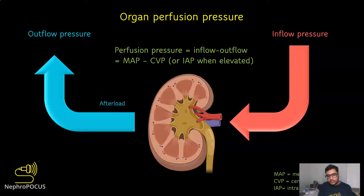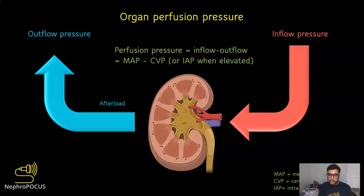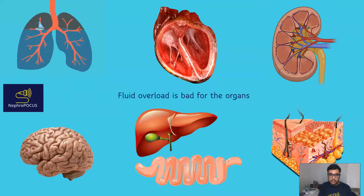Organ perfusion pressure is the difference between inflow pressure and outflow pressure. For example, in the kidney, it's the difference between mean arterial pressure and central venous pressure, or intra-abdominal pressure when it's elevated. You can also view central venous pressure as organ afterload. But in general, when we are assessing hemodynamics at the bedside, we pay more attention to forward flow — making sure stroke volume is adequate and the patient is volume responsive — and we typically do not assess organ congestion.